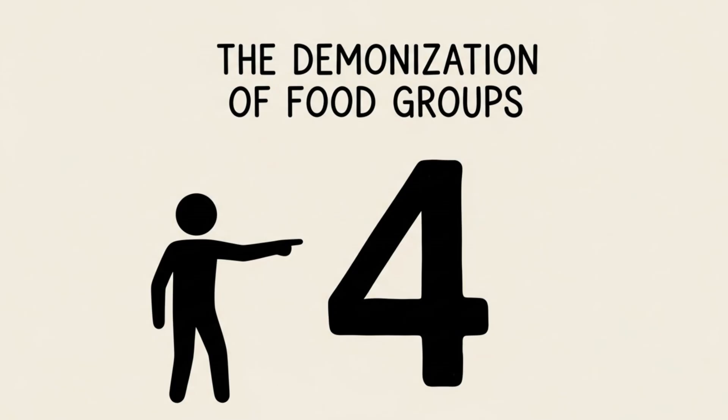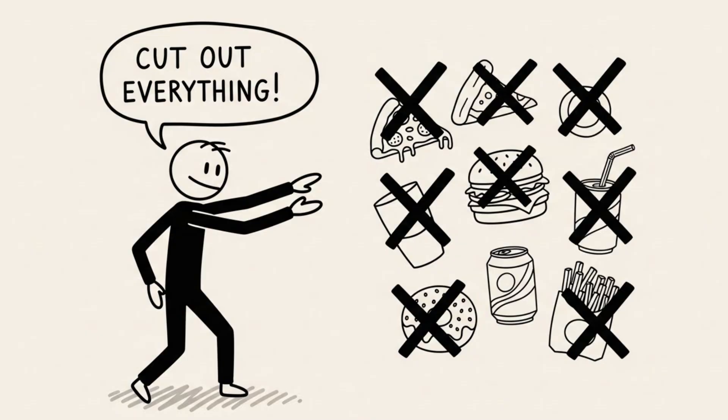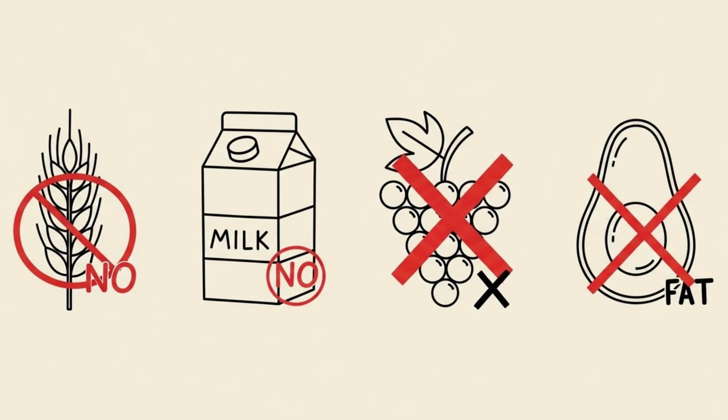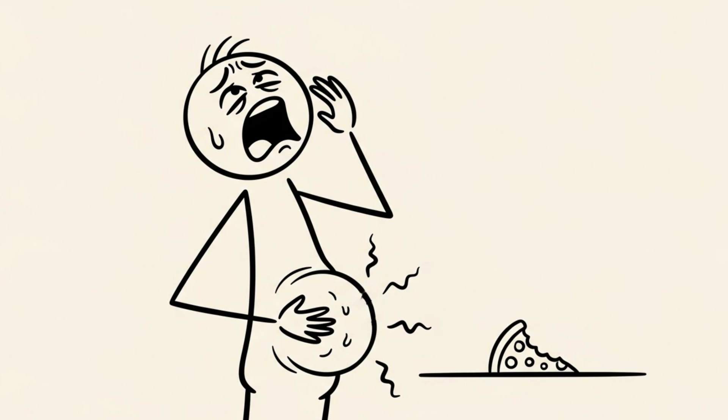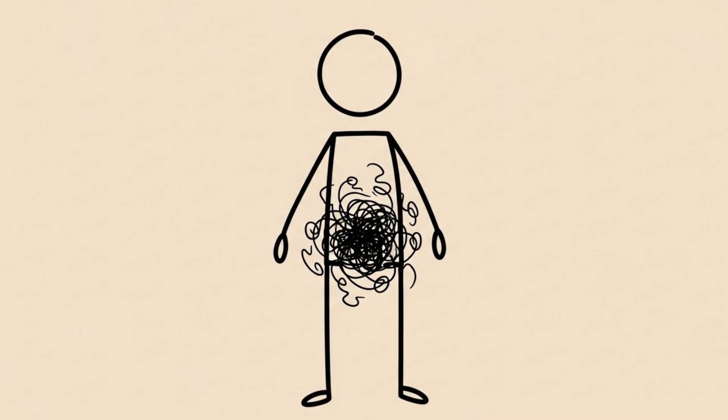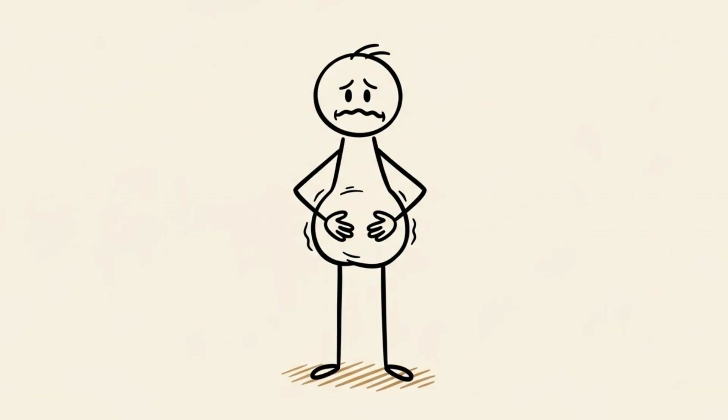Now, habit number four: the demonization of food groups. At some point, I cut out everything. No gluten, no dairy, no fruit because of sugar, no fats. I thought I was being clean, but I was actually wrecking my gut microbiome. By restricting so many food groups, I developed intolerances I never had before. My digestion was a mess, and I was constantly bloated.